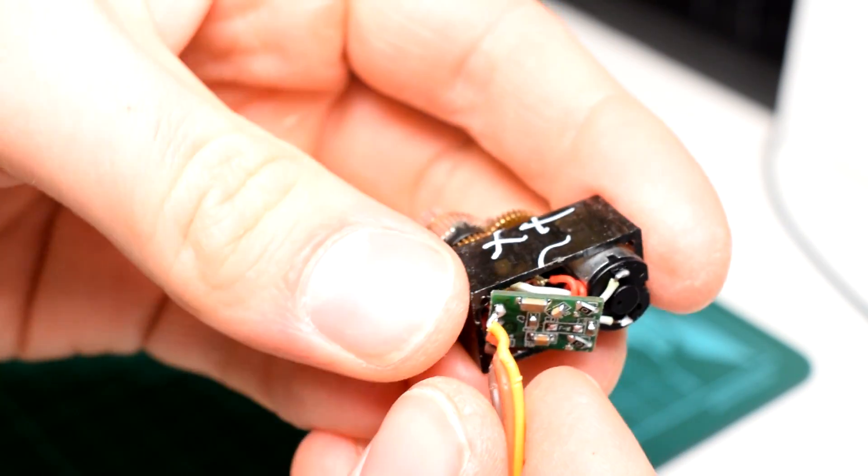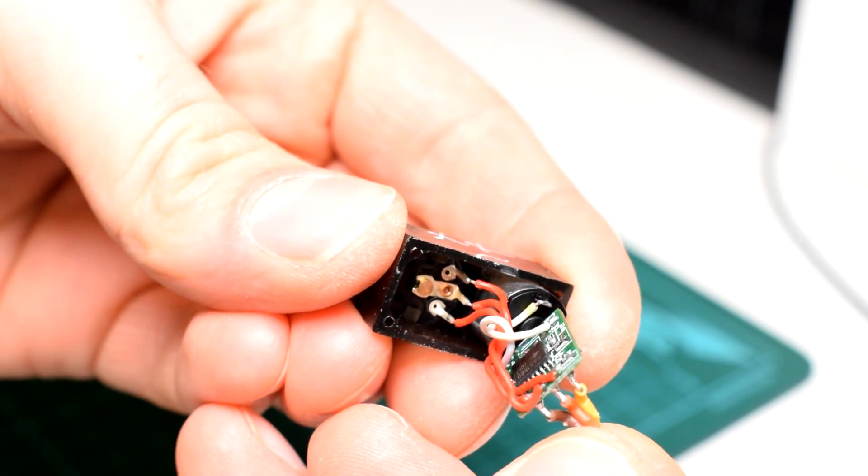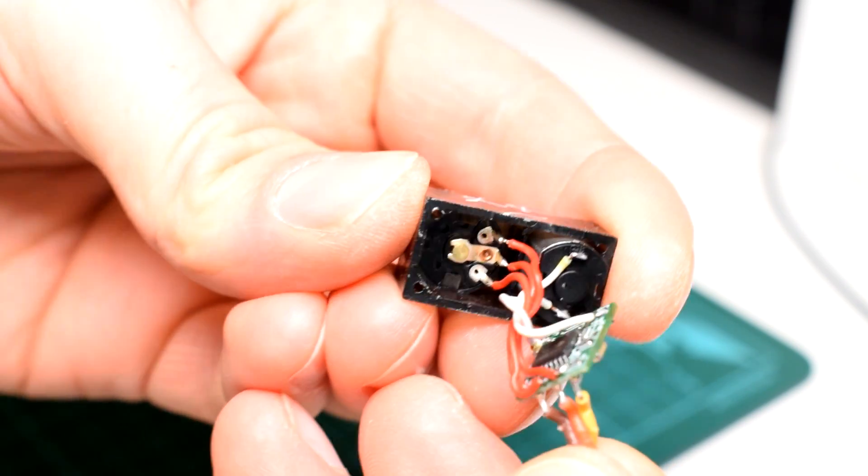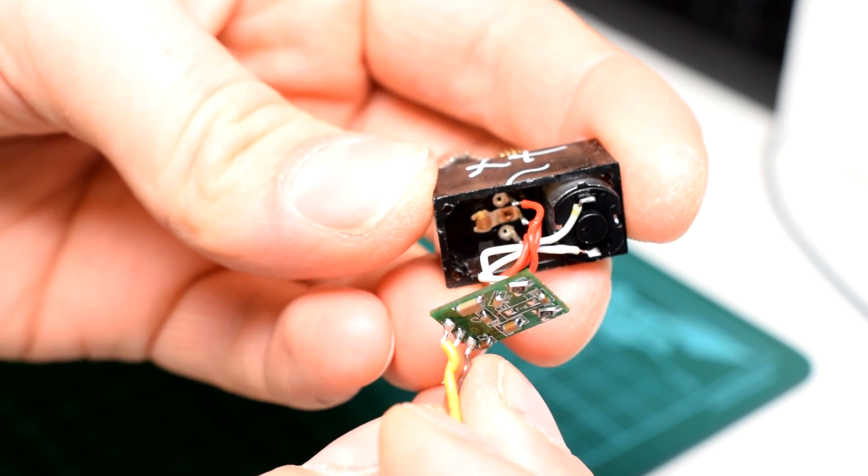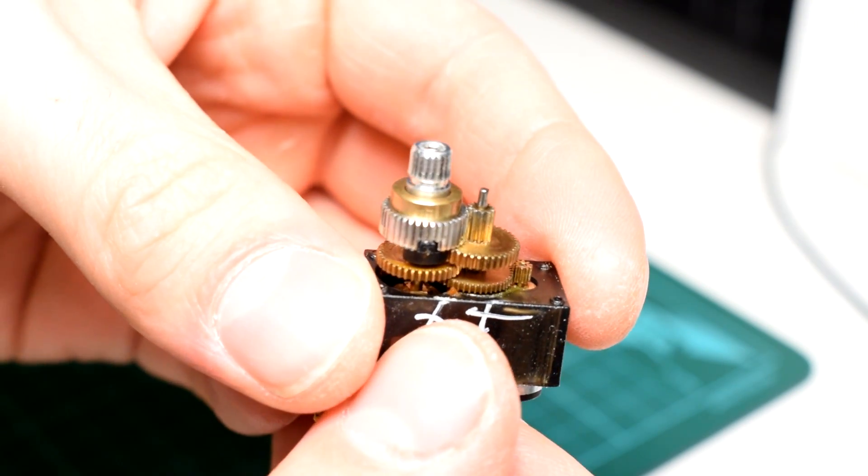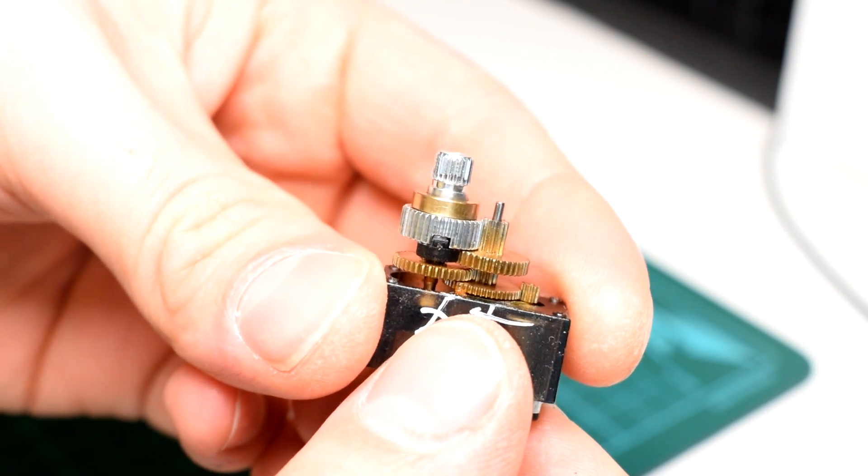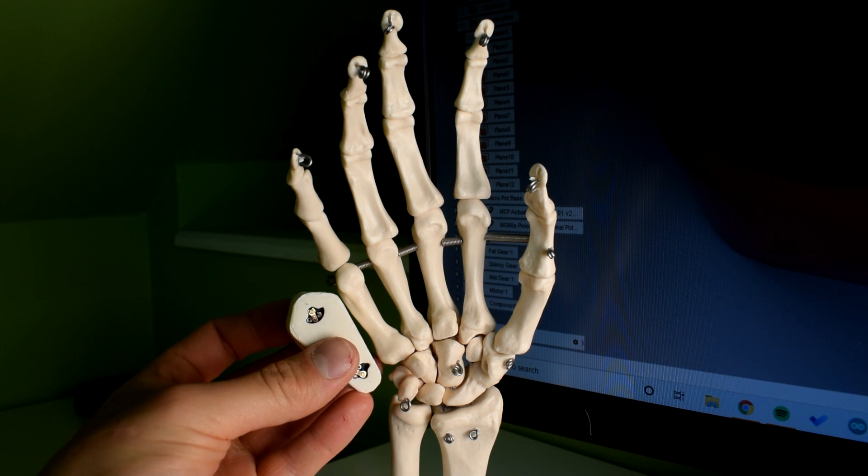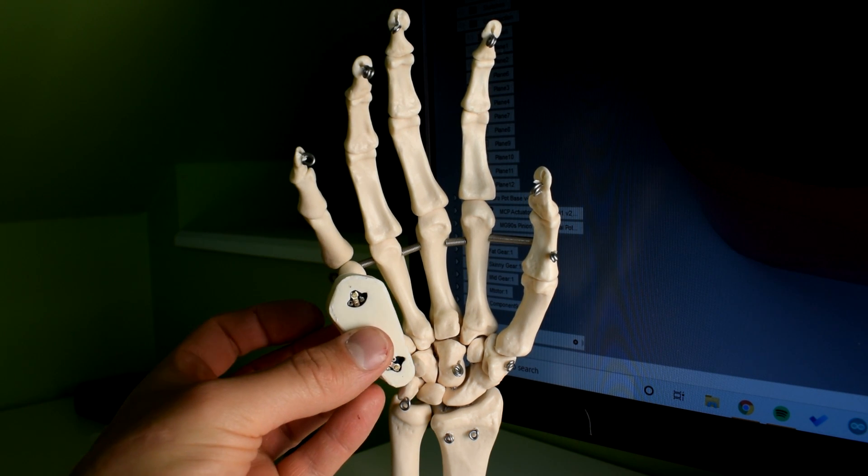This configuration is really nice and space efficient, but it is also the reason that the motor has to go on the bottom, which adds a lot of height to the design. And this makes sense for the MG90s because this additional height makes room for the circuit board. But in my design, I need to minimize height as much as possible as these components will be forming my palm.